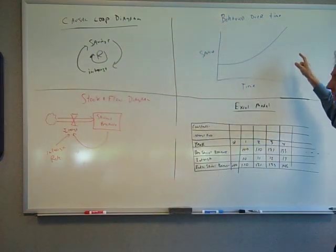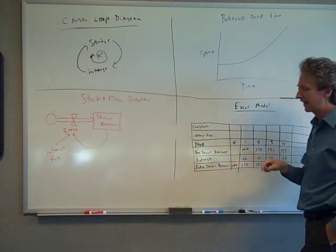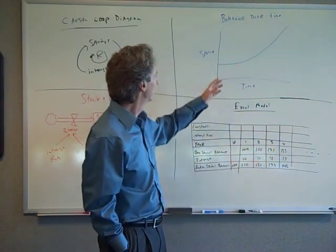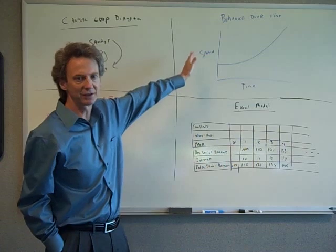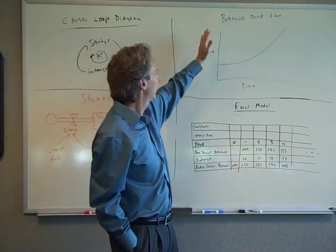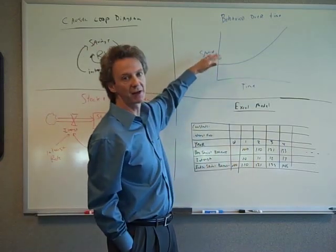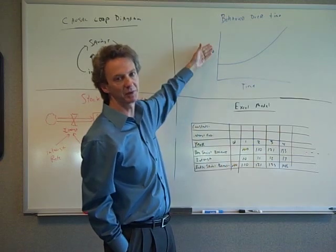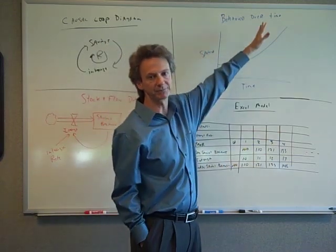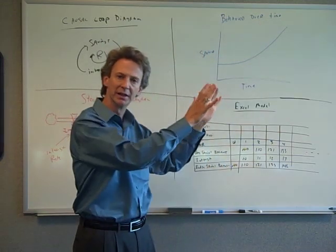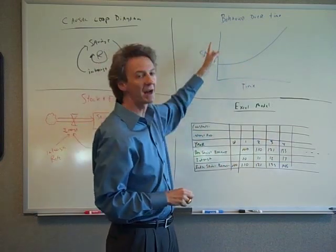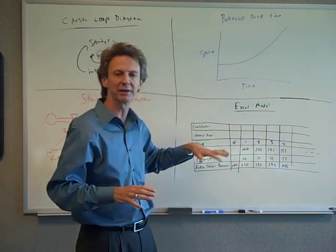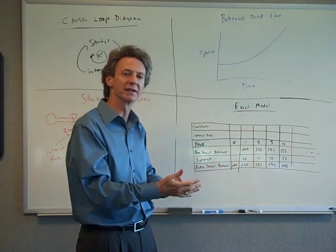The second tool is the behavior over time graph. We haven't covered this too much but it's not too difficult to understand. Basically you graph the key variables, I only picked one savings, over time. It's really the shape, the reason it's called behavior over time and the y-axis is kind of unlabeled, it's really the shape that matters.